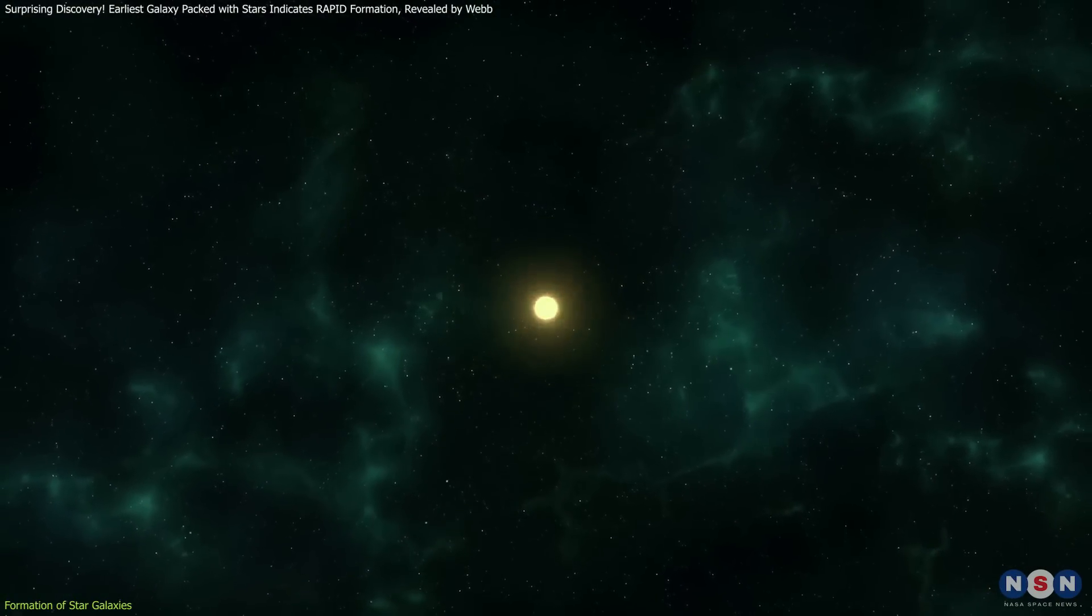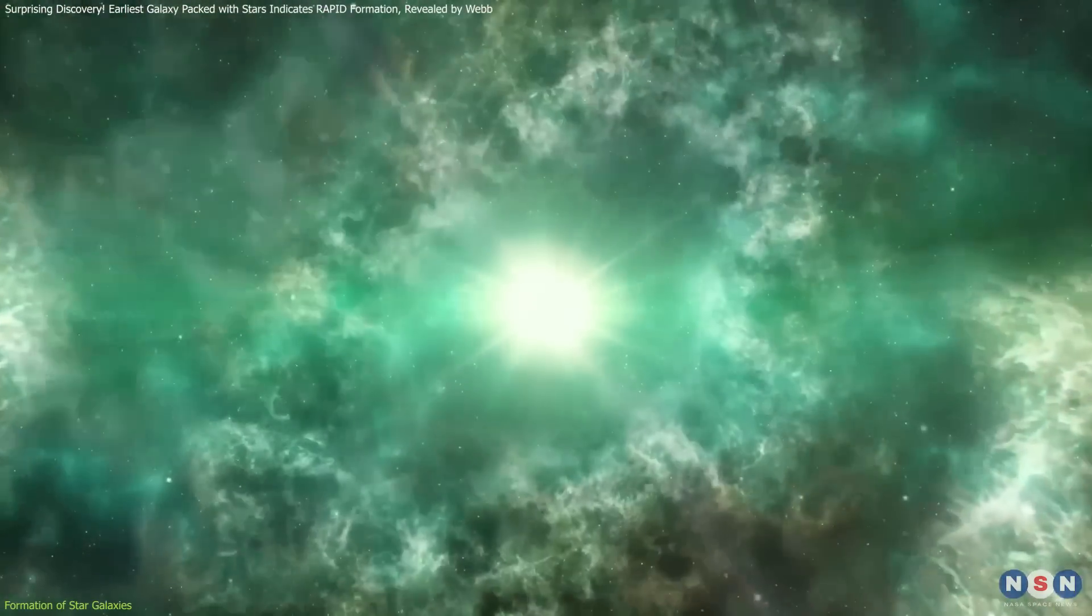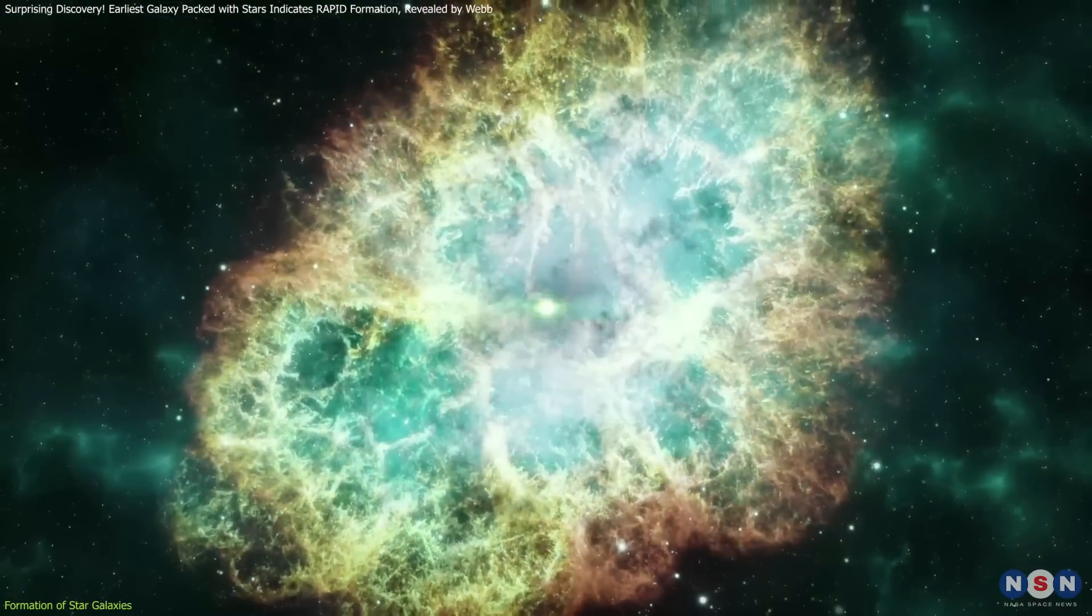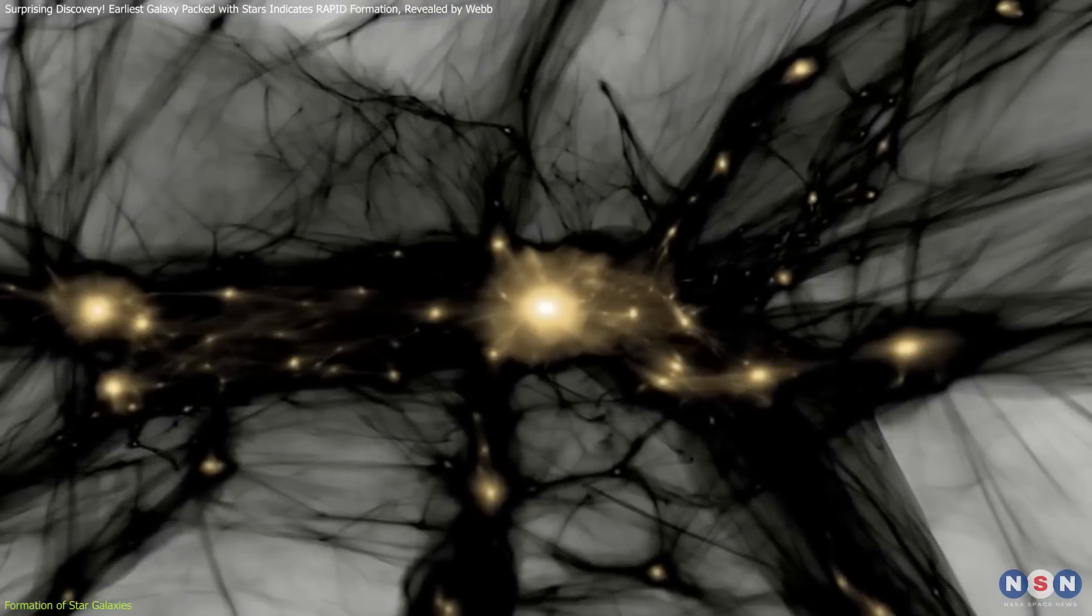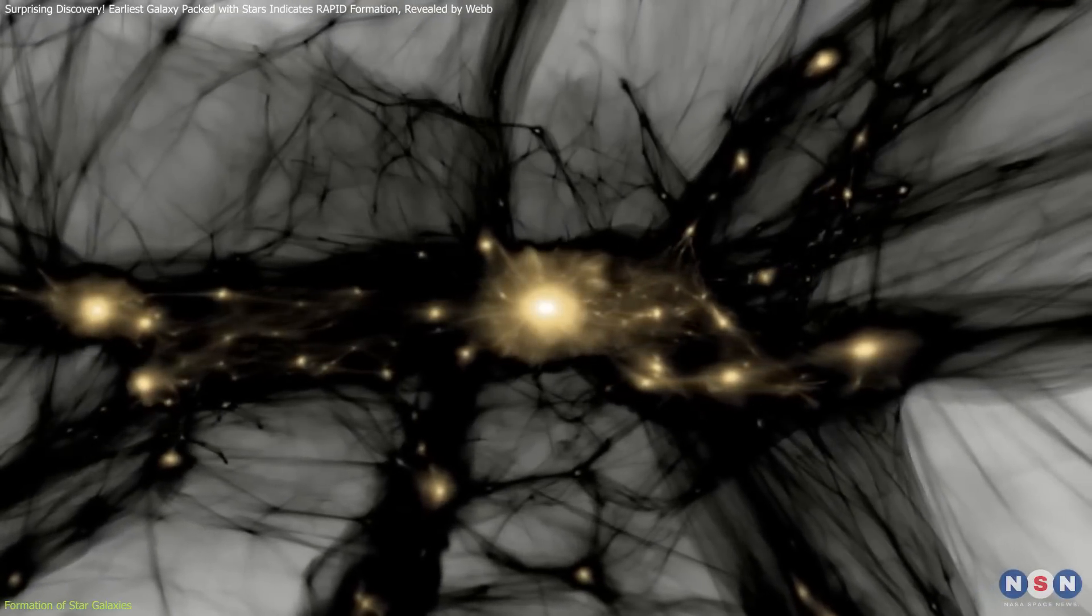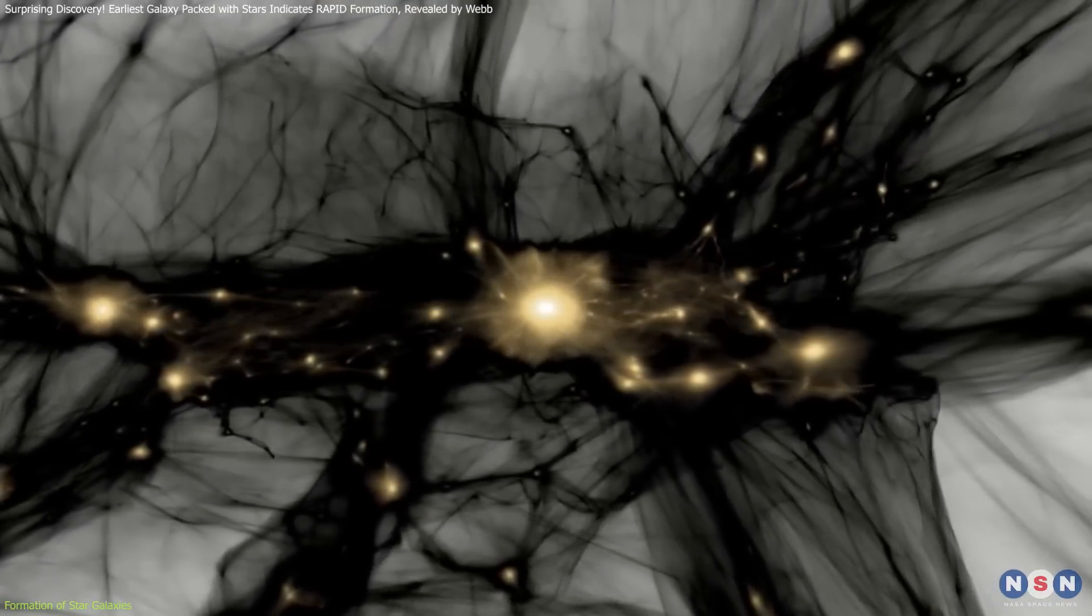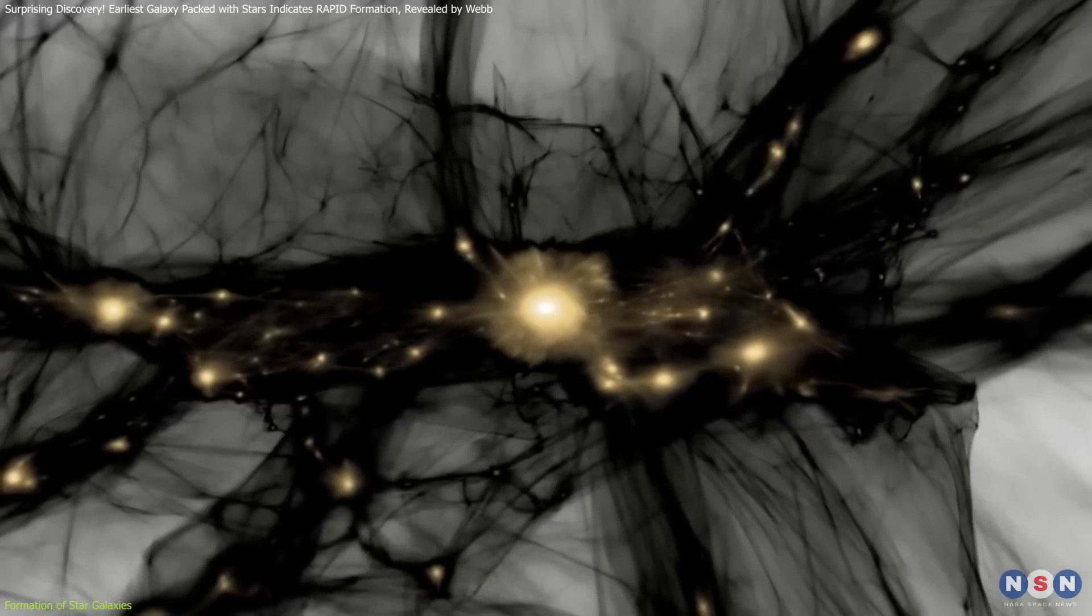These massive, short-lived stars enriched the surrounding gas with heavier elements through their supernovae, facilitating the formation of subsequent generations of stars. Small clumps of dark matter and gas merged to form the first protogalaxies, which continued to merge and grow into larger galaxies.